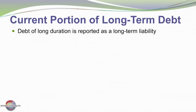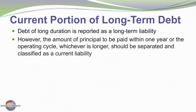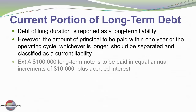Another item, not so obvious perhaps, would be the current portion of long-term debt. Debt of long duration is of course reported as a long-term liability on the balance sheet. However, the amount of principal that's due to be repaid within the operating cycle or one year, whichever is longer, should be separated and classified in the current liability section.